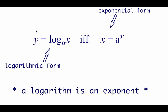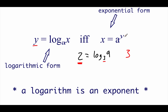If we had a logarithmic equation that said y equals log base A of x, we could rewrite that as x equals A to the y. So if we had the logarithmic equation 2 equals log base 3 of 9, this base A value becomes the base of our exponential, this y value becomes the power, and this x value on the end is what it equals. So we could rewrite this as 3 squared equals 9.